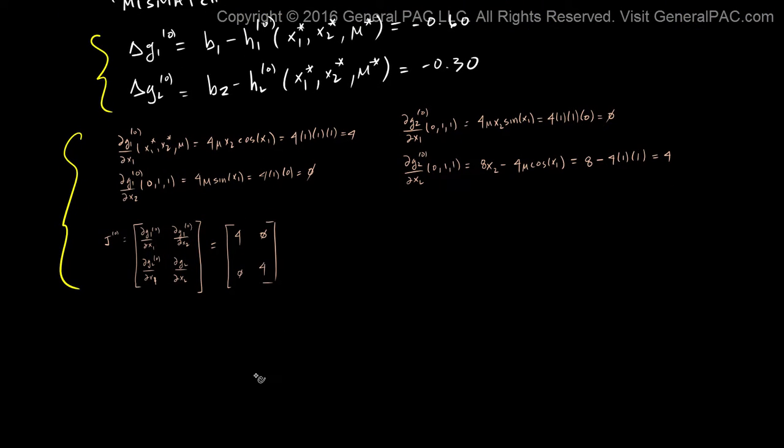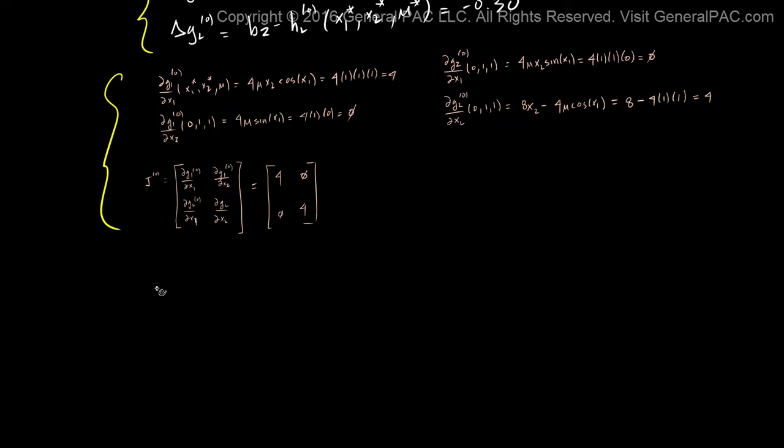Now let's get into the exciting part. The exciting part is that we already have this Jacobian matrix. So if we take this Jacobian matrix for the 0th iteration, and we multiply this Jacobian matrix by our initial values of dx1 and dx2 for the 0th iteration.